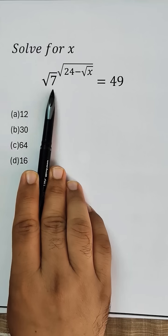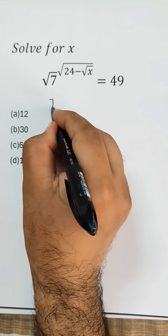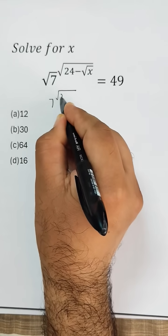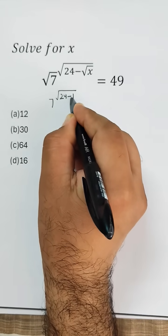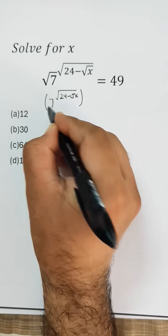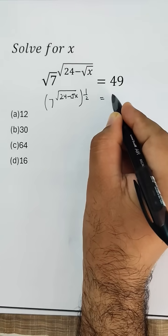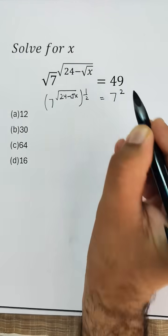Solve for x. This expression can be written as 7 to the power of square root of 24 minus root x, whole to the power 1/2, which equals 49. Now 49 can be written as 7 squared.